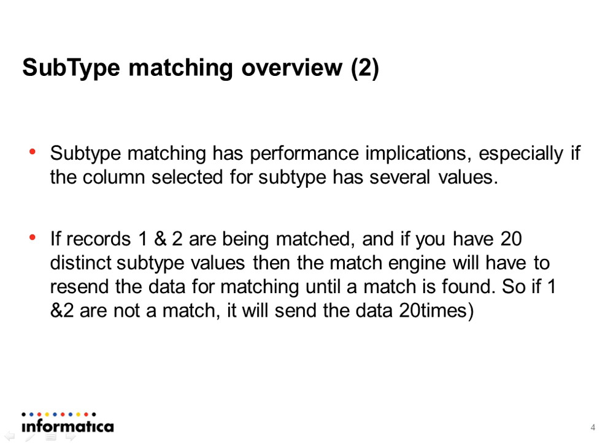Subtype matching has performance implications, especially if the column selected for subtype has several values. For example, if records 1 and 2 are being matched and both records have 20 children each with distinct subtype values, then the match engine will have to loop through each of these subtype values to find a match. If the records are not a match, it will have to go through all 20 different subtypes. That is why you have to carefully consider the performance implications with subtype matching.